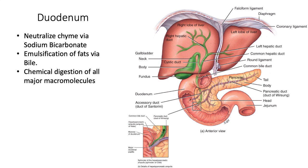The pancreas also produces multiple enzymes released into this area: pancreatic amylase, lipase, trypsin, chymotrypsin, elastase, carboxypeptidase, and other proteases — all released into the duodenum, which is where the major macromolecules undergo chemical digestion.